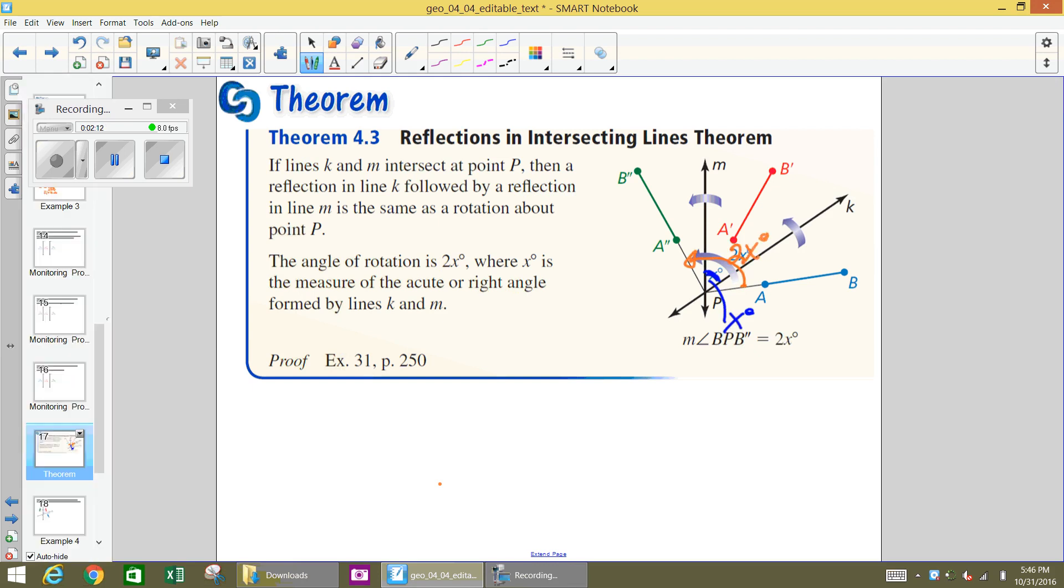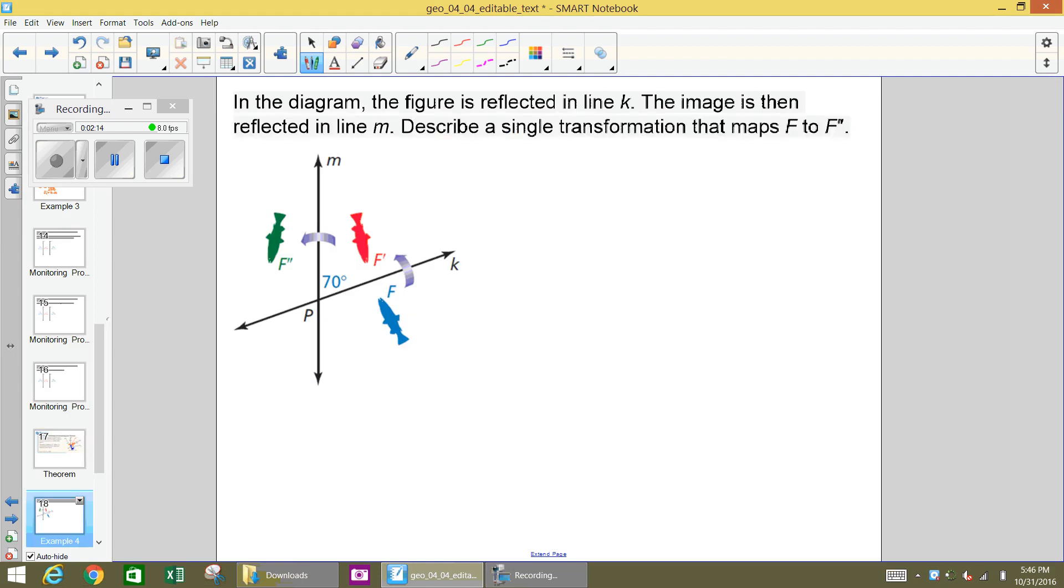So let's apply this. So if we apply this as an example, here we're going to use fish. In the diagram, the figure is going to be reflected in line K, and that's what makes it go from the blue fish to the red fish. So from F to F'.